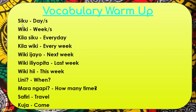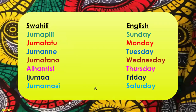Let's read through our list: Siku — day or days. Wiki — week or weeks. Kila siku — every day. Kila wiki — every week. Wiki ijayo — next week. Wiki iliopita — last week. Wiki hii — this week. Lini — when. Marangapi — how many times. Safiri — travel. Kuja — come.